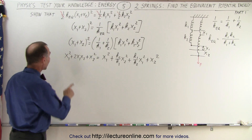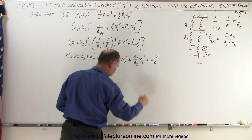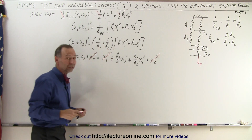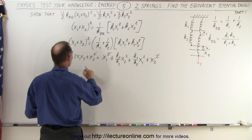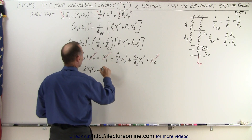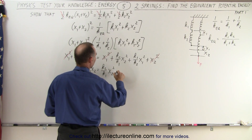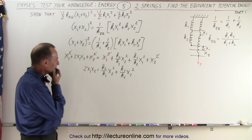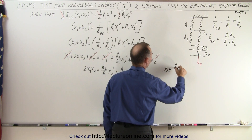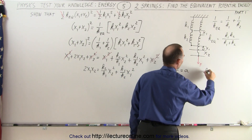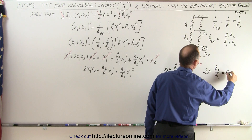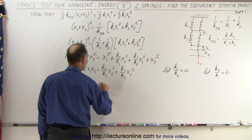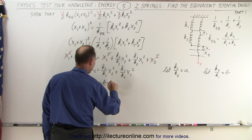On the left side we have x1² and on the right side we also have x1²; similarly x2² appears on both sides, so we cancel those matching terms. After cancellation we have 2x1x2 = k2/k1·x2² + k1/k2·x1². To simplify, let a = k1/k2 and b = k2/k1, so we have 2x1x2 = b·x2² + a·x1².